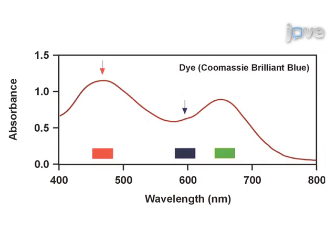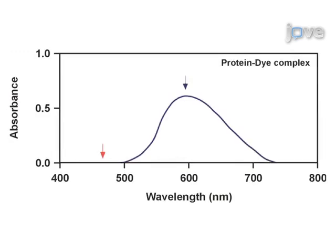590, and 650 nm respectively. The blue form binds the protein, forming a complex that intensely absorbs light at 594 nm.